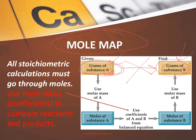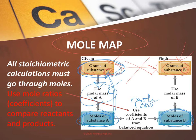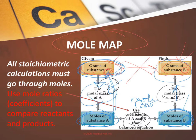This is the path we need to follow. If you're given grams of a certain substance, convert the grams to moles of that same substance using the molar mass. Once you have moles of substance A, you can compare it to moles of any other substance in that chemical reaction by using the mole ratio. Then, once you have moles of the right substance, use molar mass again to get grams of B. Going from grams of one substance to grams of a different substance is three calculations.